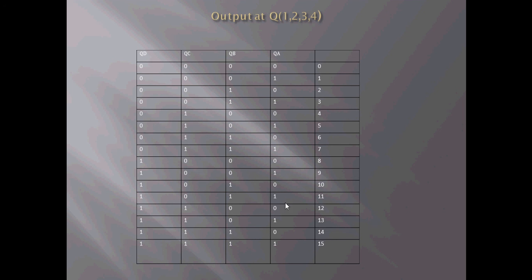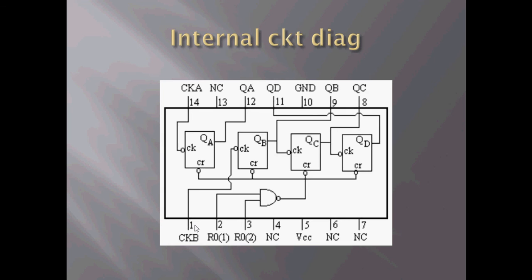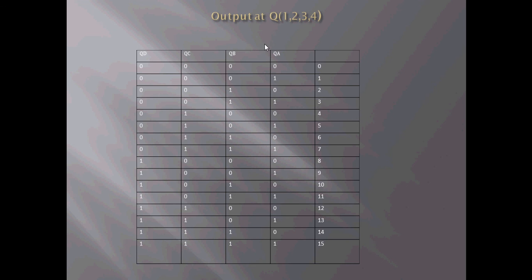After 11, you get 12. We need to find a unique combination that has not occurred prior to 12. The combination is QD and QC, which are both 1. We have not had both 1 prior to that in QD and QC. If we connect QD and QC to pins 2 and 3, the whole flip flop resets, and QA, B, C, D turn to 0. It starts counting from the beginning again.